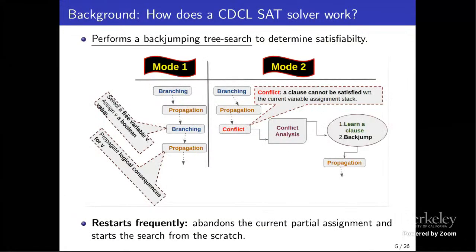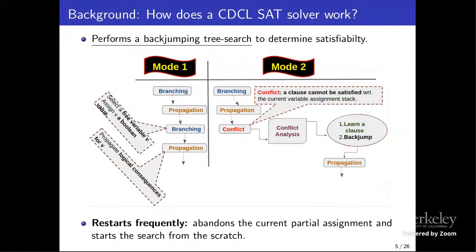The next two slides present background required to understand the talk. A SAT solver uses a backjumping tree search to determine satisfiability. The two major components of a CDCL solver are branching and propagation, where branching selects a free variable and assigns a boolean value to it.